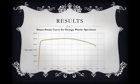The stress-strain curve for the orange plastic specimen shows that the specimen had an ultimate tensile strength of about 50,000 PSI. The specimen fractured after about 17.5% elongation.